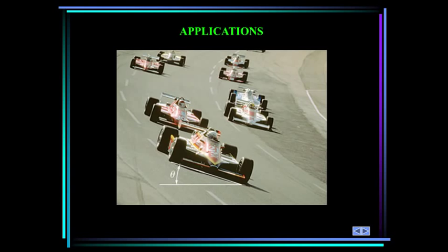First, in applications: racetrack turns are often banked to reduce the frictional forces required to keep the cars from sliding up to the outer rail at high speeds. If the car's maximum velocity and a minimum coefficient of friction between the tires and track are specified, how can we determine the minimum banking angle theta required to prevent the car from sliding up the track?